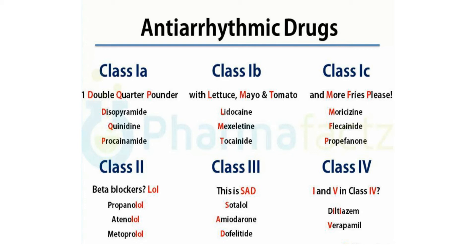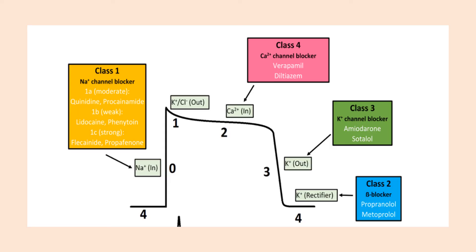Those are the five classes and their mnemonics to help you remember. I have a picture here of the cardiac action potential, and I'm trying to depict where each class of drugs would act. They are not in the order of class one, two, three, four — please note that.